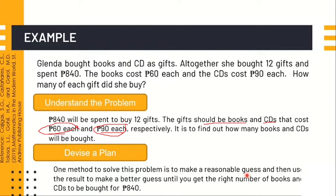Step 2 of the method: devise a plan. One method to solve this problem is to make a reasonable guess, and then use the result to make a better guess until you get the right number of books and CDs to be bought for 840 pesos.